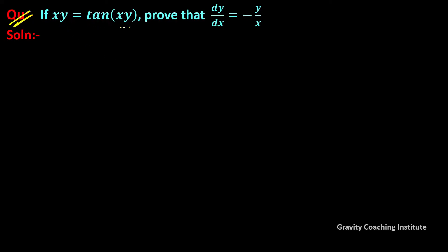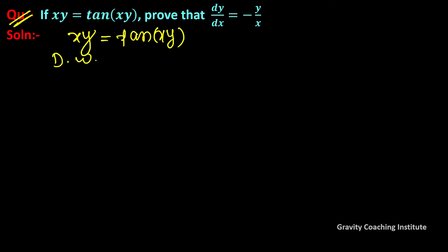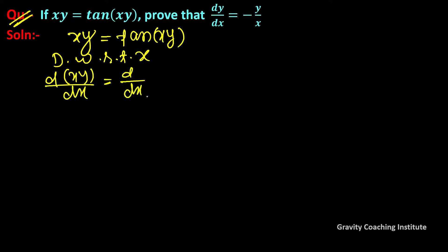Question: if xy equals tan(xy), prove that dy/dx equals minus y upon x. Given xy equal to tan(xy), now differentiate with respect to x. Derivative of xy equals derivative of tan(xy).